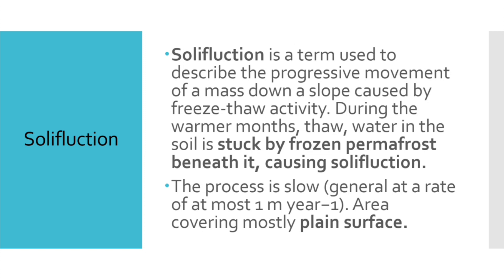Solifluxion is a slow process in a permafrost region, which shows a progressive movement — or we can say that it is a mass downslope movement — which involves the freeze and thaw activity.